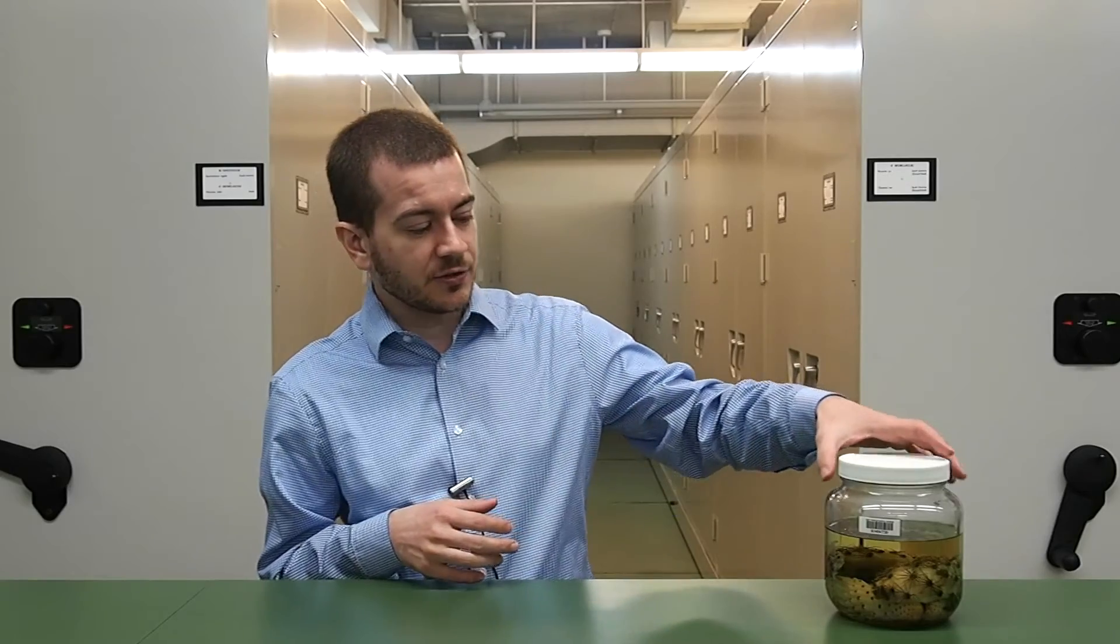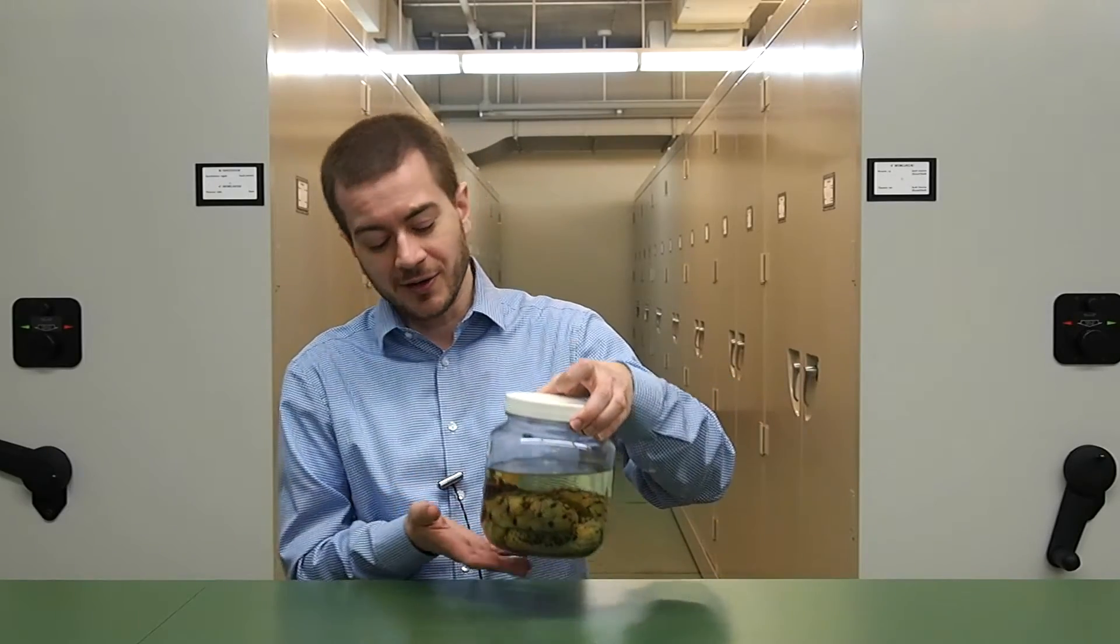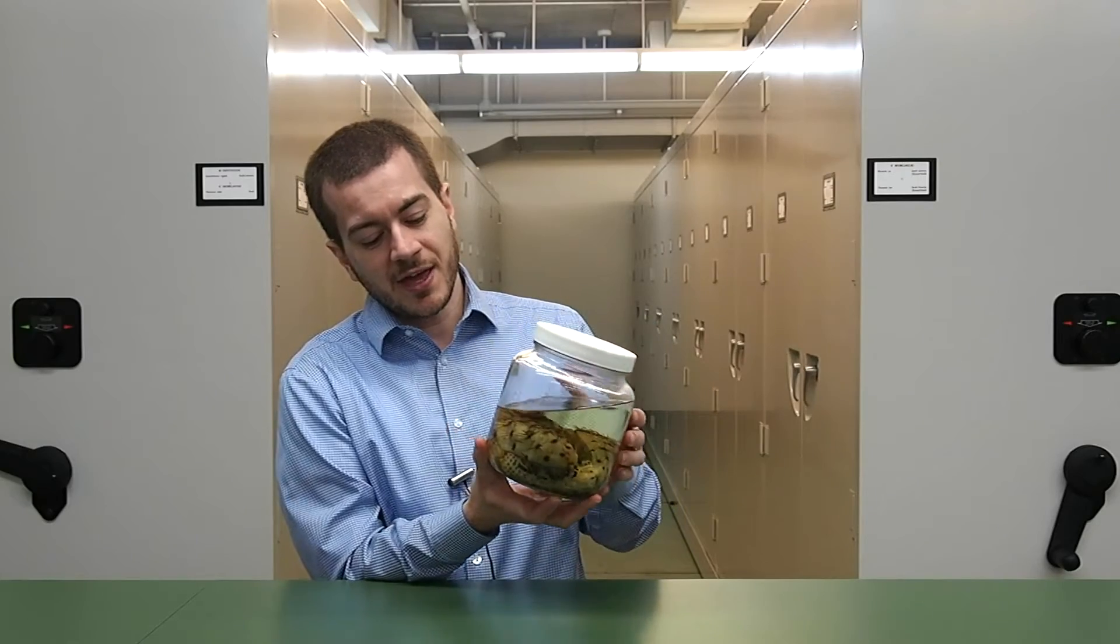The group that I study, orchids, are very challenging to make into herbarium specimens. Their flowers are very very complicated in terms of their structure. They don't really squish very well when you put them into a press, and orchids often have a lot of moisture in them so it's very challenging to dry them out. The same thing is also true of cacti.